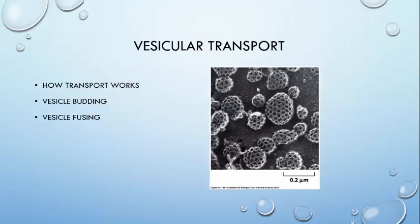Now that we know how proteins have been imported into the ER, it's time to talk about how these proteins and other molecules are sent to their final destination around the cell, which may be another organelle or the plasma membrane. These are transported via transport vesicles. In this section, I'm going to review how transport works, discuss how vesicles are formed, and wrap up with how the vesicles dock at their destination.